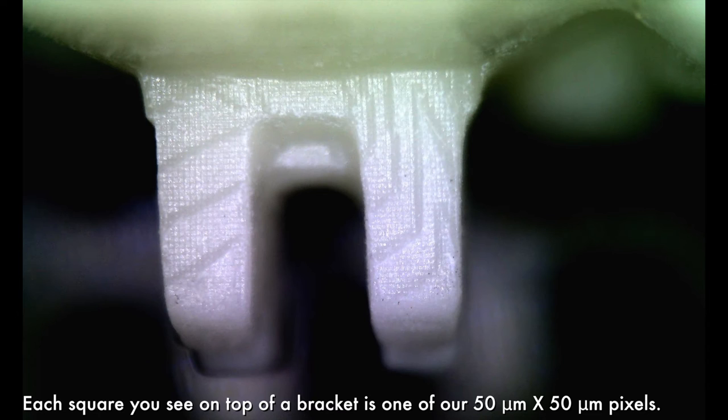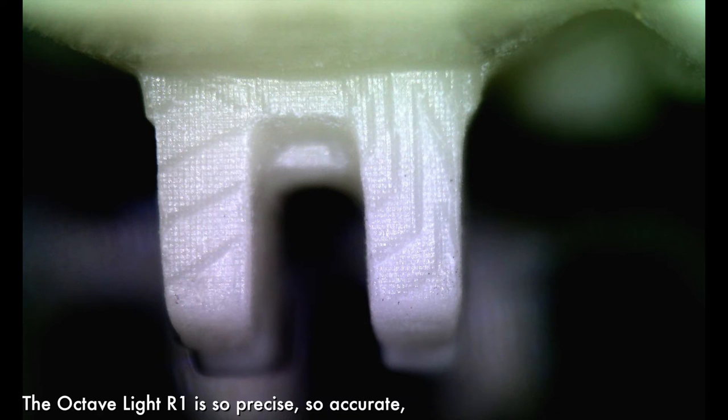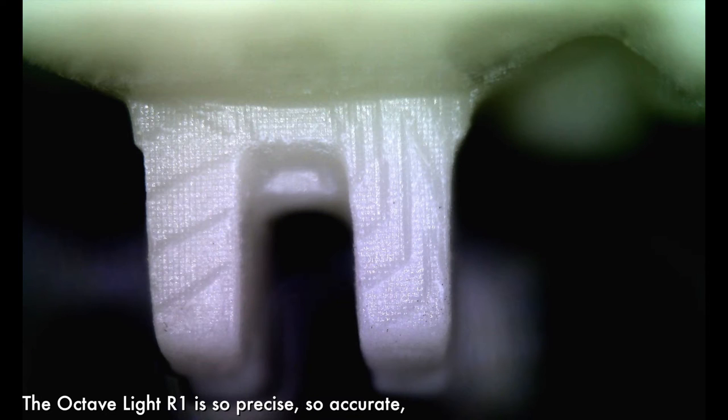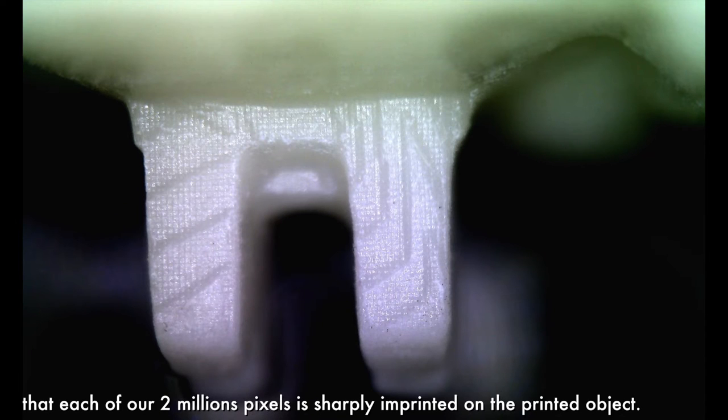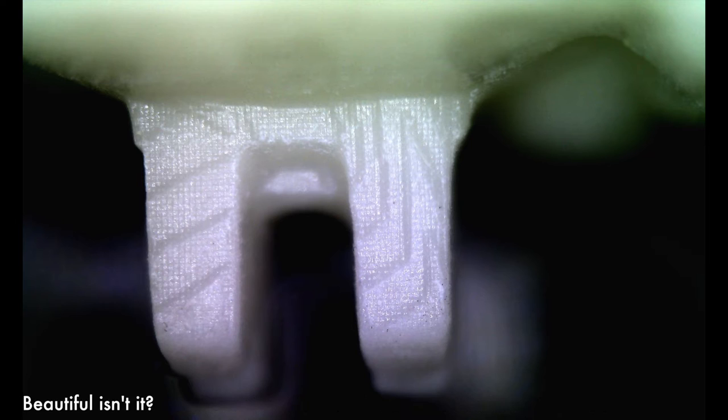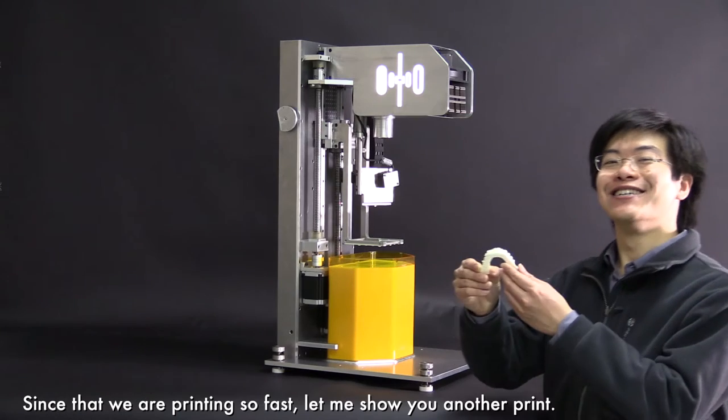Let's look at the top of these brackets. Each square you see on top of this bracket is one of our 15 micrometer by 15 micrometer pixels. The Octav Light R1 is so precise, so accurate, that each of our 2 million pixels is sharply imprinted onto the print object. Beautiful, isn't it?